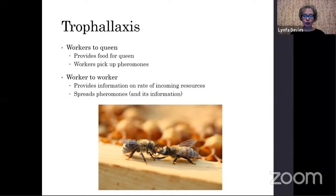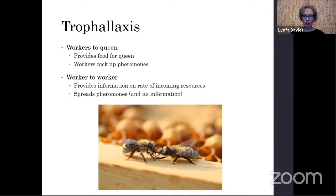This information informs other workers about the rate of incoming resources and whether they need to recruit more foragers. It also tells the bees whether there are any problems with the queen — maybe she's been lost. If you remove a queen from a colony, it only takes about 20 minutes before you hear a change in behaviour — they become very animated, almost roaring rather than gently buzzing. That shows how effective this system is: it's very quick for them to detect changes happening within the colony.